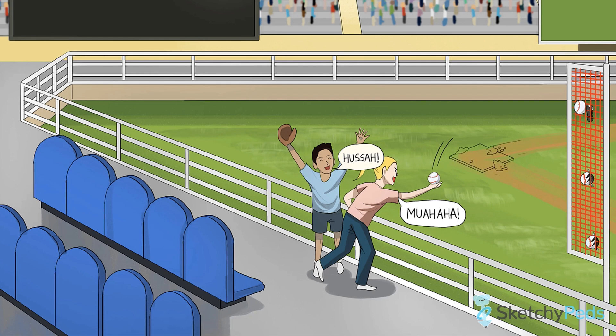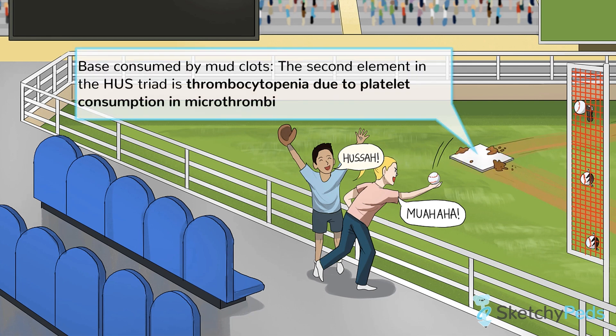The thrombocytopenia results from a consumptive process, with platelets being used up to make microthrombi. Fortunately, you rarely see bleeding in these cases. See that plate covered in mud clots? You'll never forget that the low platelets are due to clot formation.